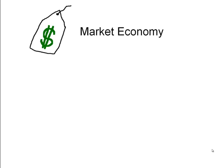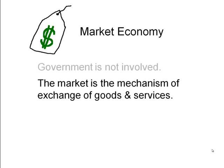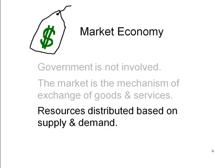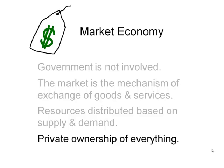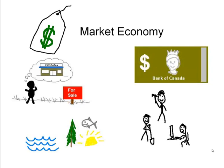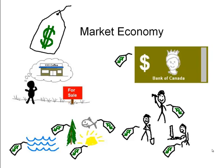A market economy is the other end of the spectrum. Government is not involved. The market is the mechanism of the exchange of goods and services, and resources are distributed by supply and demand. There is private ownership of everything. The entrepreneur has an idea — they want to get a coffee shop up and running. They need capital, labor, and natural resources, and everything has a price. As long as the entrepreneur can raise the capital, pay interest, hire labor, and purchase natural resources, they're welcome to do that.